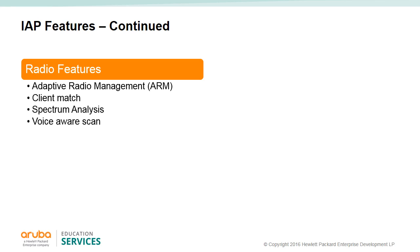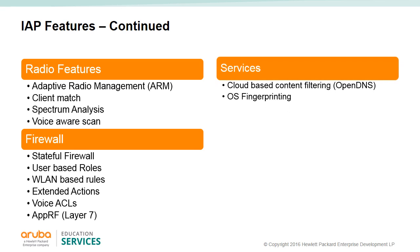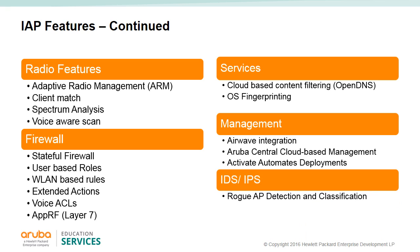There are also special features like voice-aware scanning. The IAPs also support a stateful role-based firewall. Roles have extended actions such as logging or blacklisting. There are predefined voice policies for various types of voice protocols. AppRF is Aruba's layer 7 firewall capability. The IAP also offers content filtering with a subscription to OpenDNS. Aruba Instant also has an OS fingerprinting feature that gathers information about each client connected to the wireless LAN. For management, an AirWave server can be used or Aruba Central, which is a cloud-based management system. The cloud-based Activate service will direct the IAP cluster to the desired management system automatically. The Aruba Instant also supports intrusion detection and protection with rogue detection.